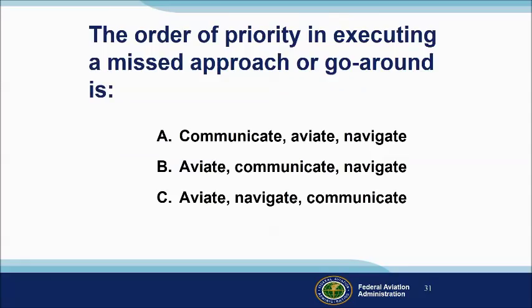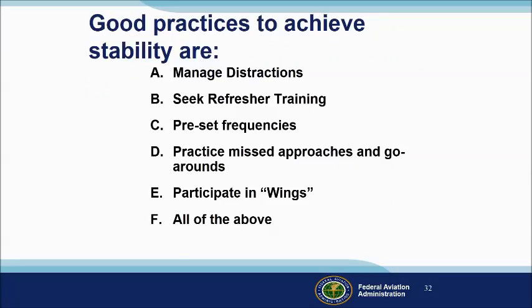The order of priority in executing a missed approach or go-around: while all actions happen at nearly the same time, your first priority is to fly the airplane, followed by navigating to avoid impacting terrain, and once those are under control, communicate your intentions. Good practices to avoid loss of control include: manage distractions, seek refresher training, pre-set frequencies, practice missed approaches and go-arounds, and participate in Wings — the correct answer is all of the above.